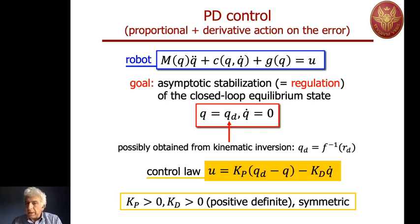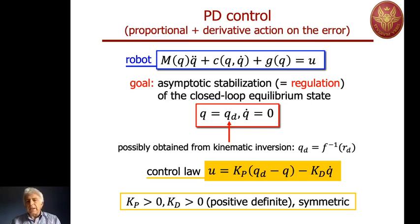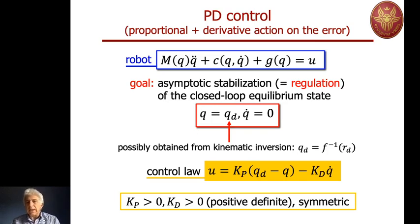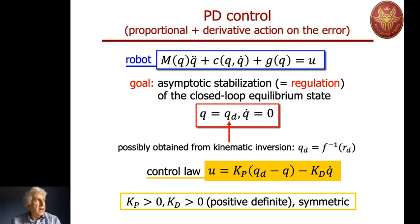There is a proportional term with respect to the joint position error, and a derivative term with gain K_d with respect to the velocity error — the derivative of the position error — keeping in mind that q_d is constant. If we take the derivative of the error q_d minus q, we get q_d_dot, which is zero, minus q_dot. So the second term can be rewritten as a derivative term with respect to the position error, namely the velocity error. The desired q_d may come from kinematic inversion of a desired pose of the end effector, but that is a different story.